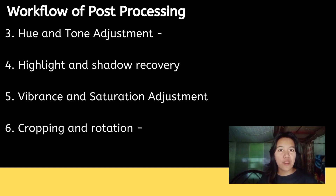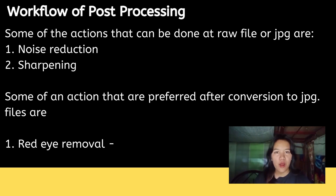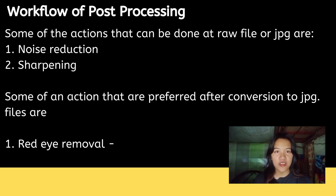Number 6 is cropping and rotation — cropping is the removal of unwanted outer areas from an image, while rotating simply turns it sideways. Actions that can be done at both the RAW or JPEG stage include: noise reduction, which is the removal of unwanted variation in pixel values from an image; and sharpening, which enhances the details and contrast of an image, making it look clear and vivid.